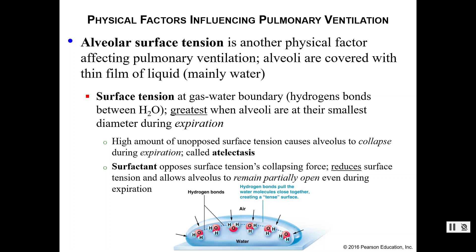Surface tension is greatest when the alveoli are at their smallest diameter, which occurs during expiration. If surface tension becomes great enough, the alveoli could collapse during expiration. High, unopposed surface tension can cause alveolar collapse, which we call atelectasis.